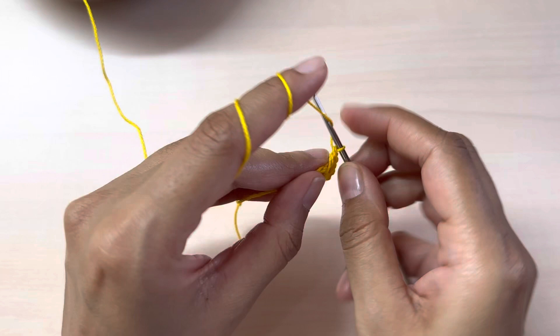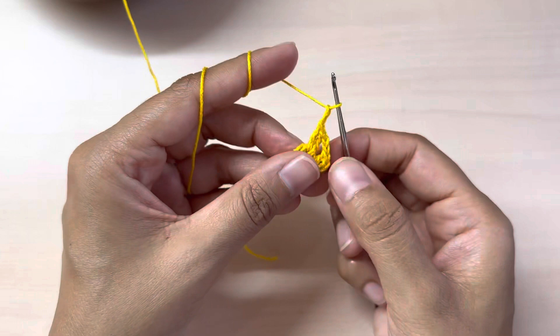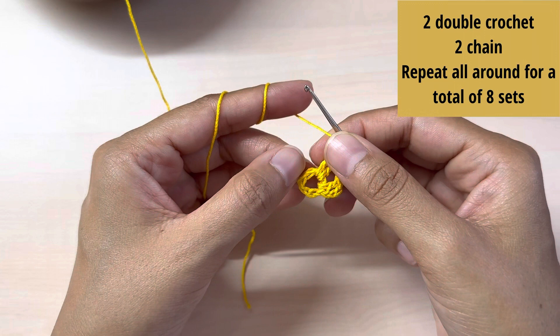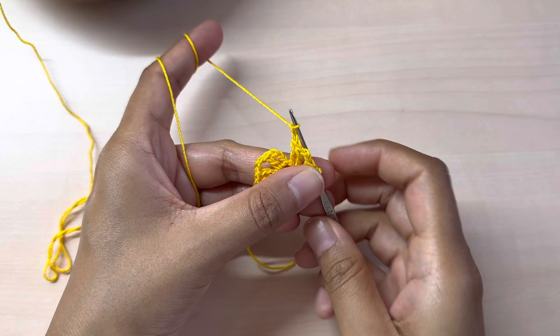Chain two. Now we're going to start the repeat pattern which is two double crochet and two chains. One, two. As you can see we have two sets complete. We want to make a total of eight sets so do that and I'll meet you here.